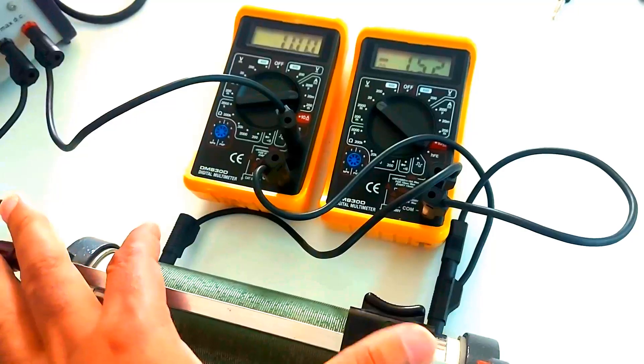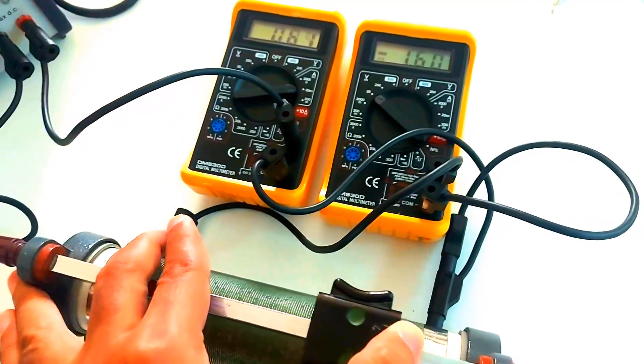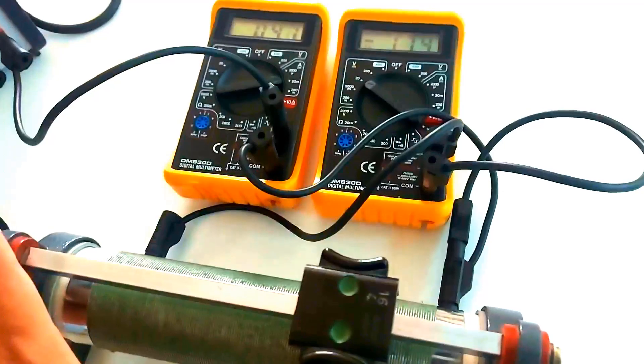More resistance means lower current and lower voltage. When the contact slides the other way, both increase.